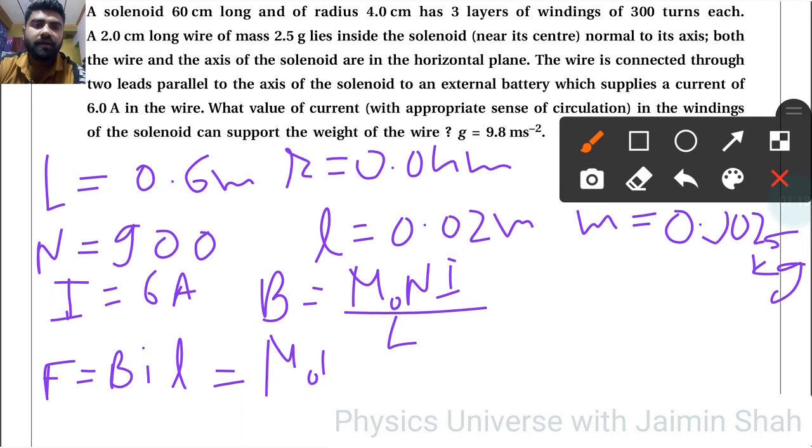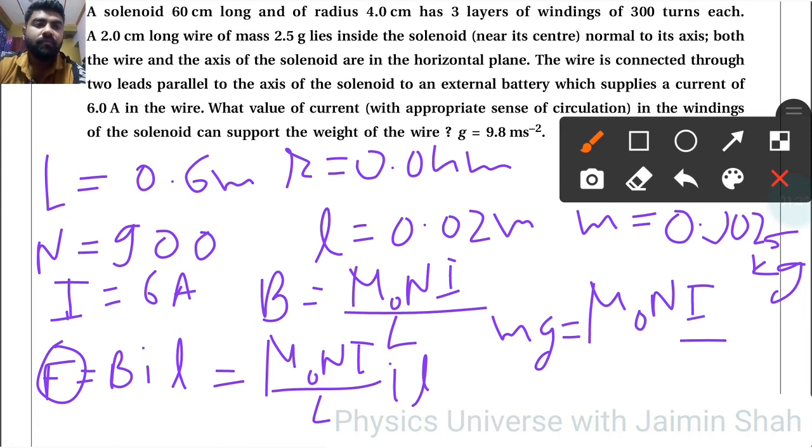So mg equals μ₀NI/L times IL. So see here, what is the value of current? The current that we have to find, so I is equal to mg upon μ₀nI into l.